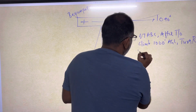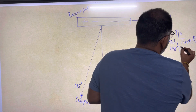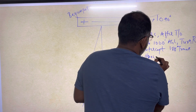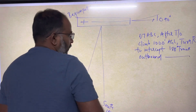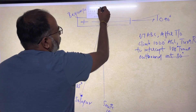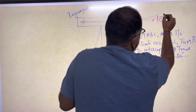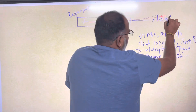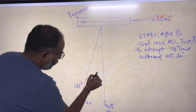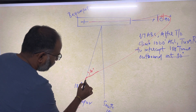Turn right to intercept your 185 degrees track, which is outbound. You have to intercept this track at 30 degrees. You climb straight to 1000 feet AGL on 090. This is where you have climbed 1000 feet AGL — now you turn right and intercept your track. This is the track you want to follow to Solapur. While coming in, you intercept this track at an angle of 30 degrees, then turn onto the track and fly to Solapur.